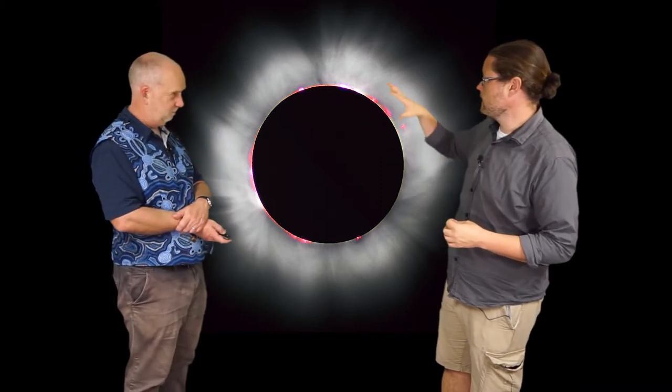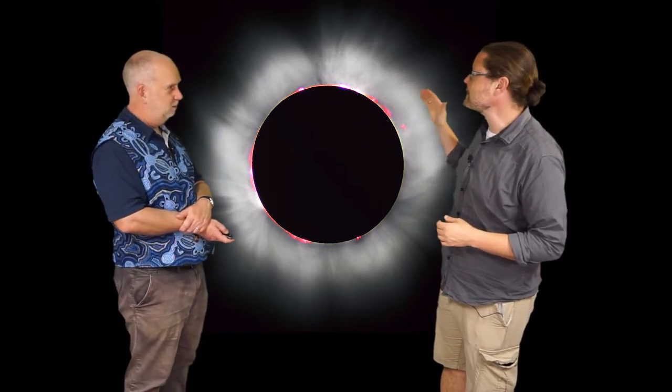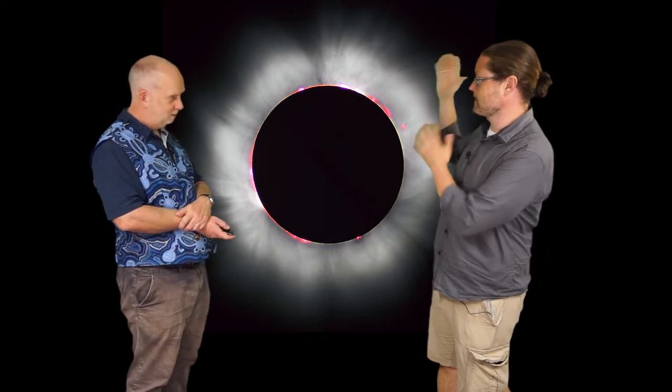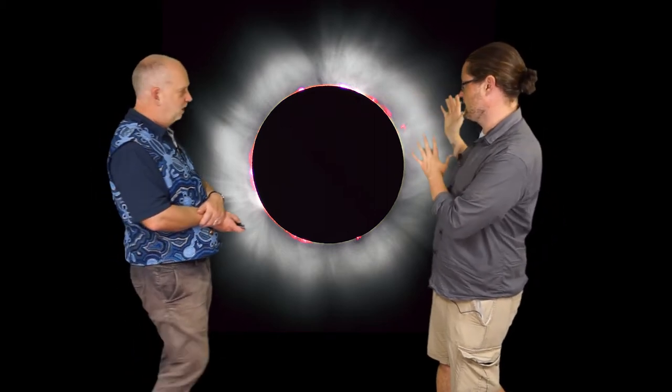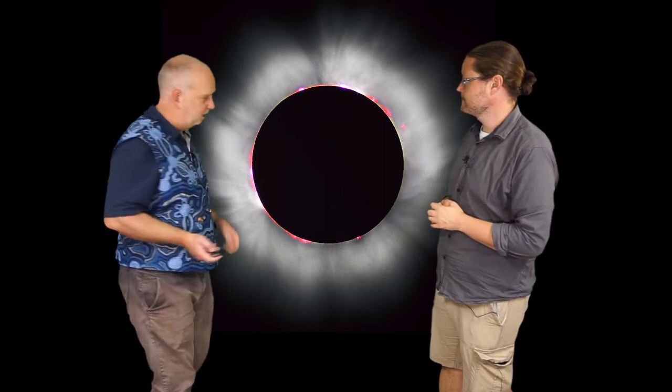So Paul, when we look at this and we look at the corona and the chromosphere, there still isn't kind of this clear edge. It just kind of keeps going. Yeah, it doesn't look like there's a clear edge here.